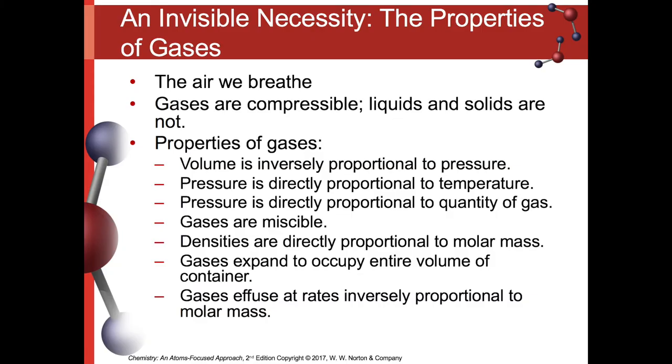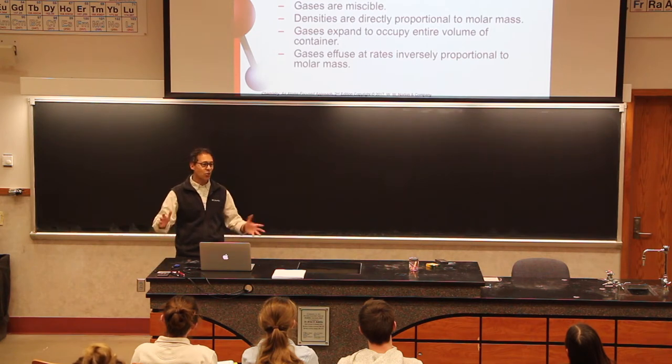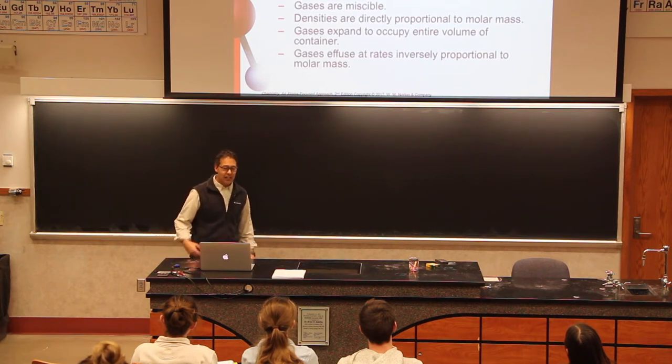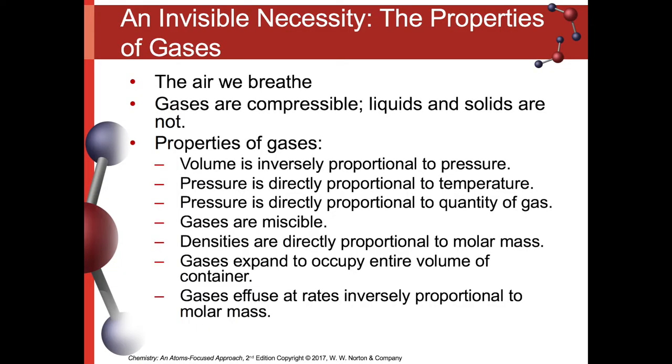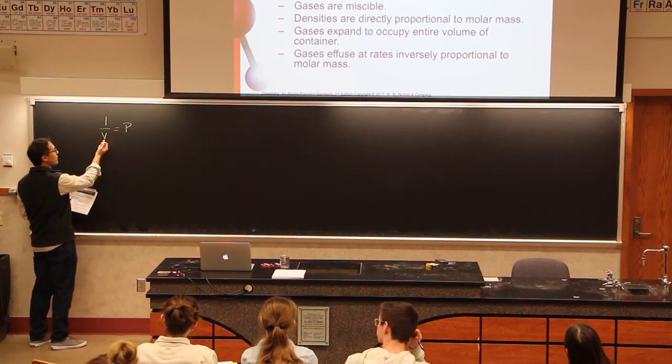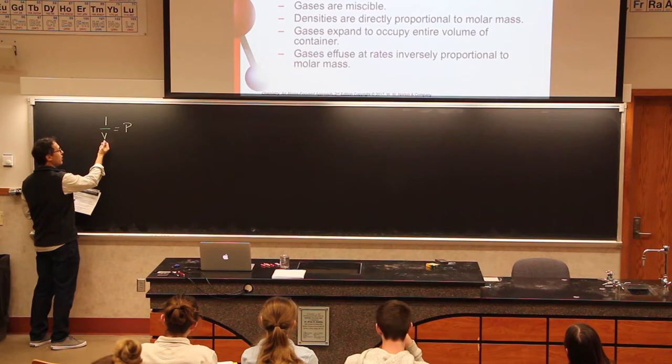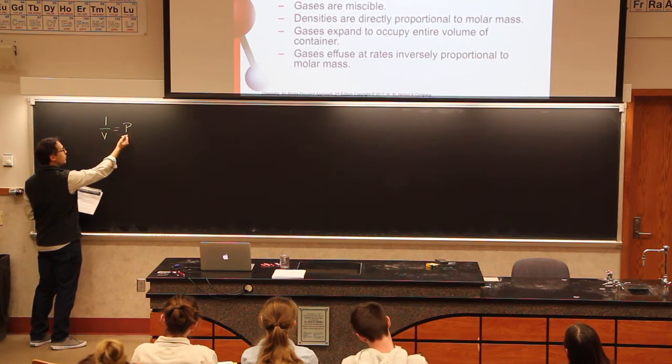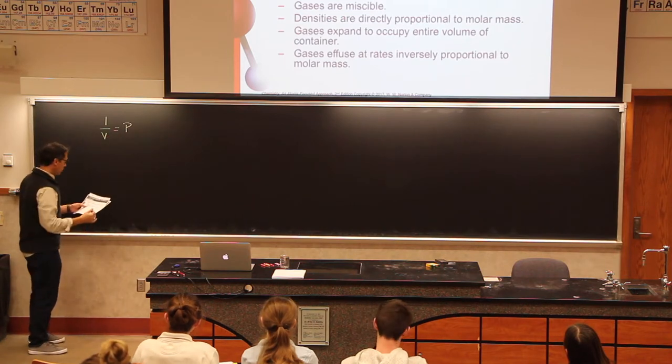So to get us started here, the air that we breathe is mostly nitrogen, like 79%, about 20% oxygen. And then there's a little bit of some other gases mixed in there. These gases have some properties, and we express these mathematically. Some mathematic principles here: volume is inversely proportional to pressure. So as the volume gets bigger, the pressure gets smaller. Or if the pressure gets bigger, the volume gets smaller.